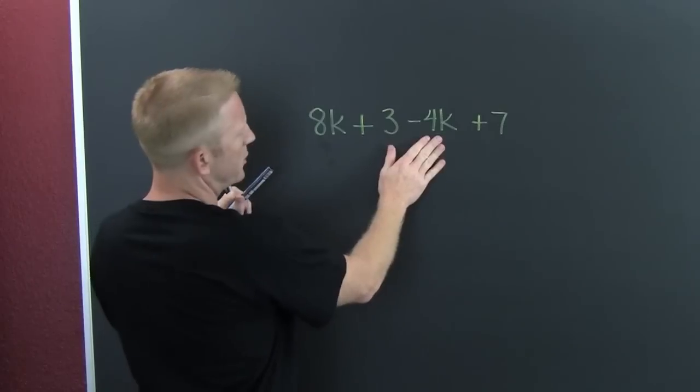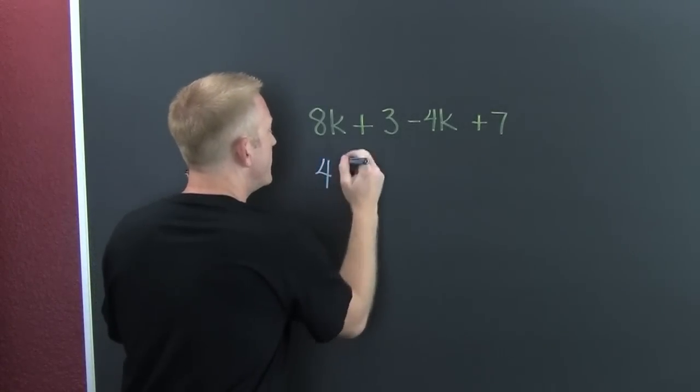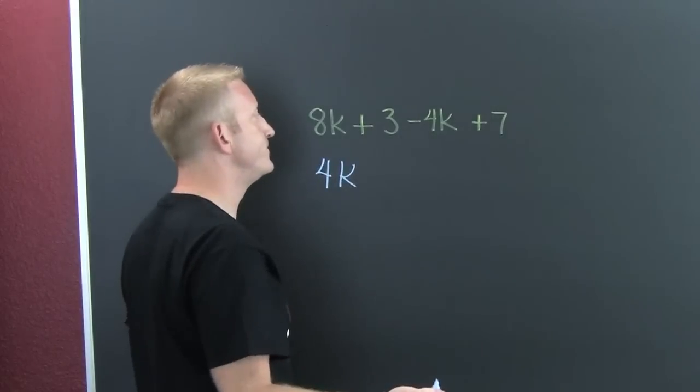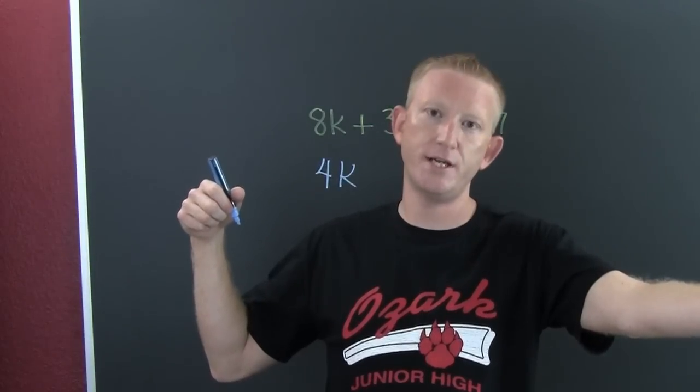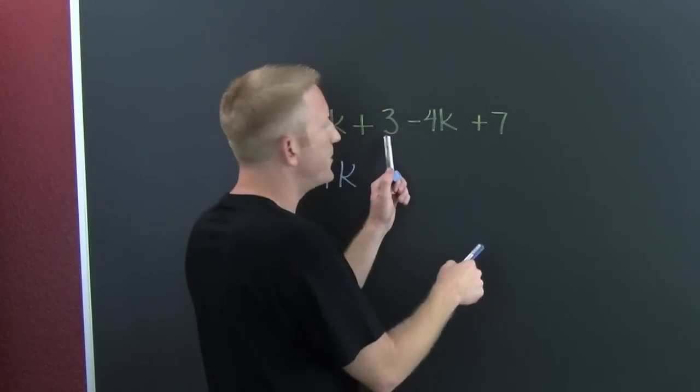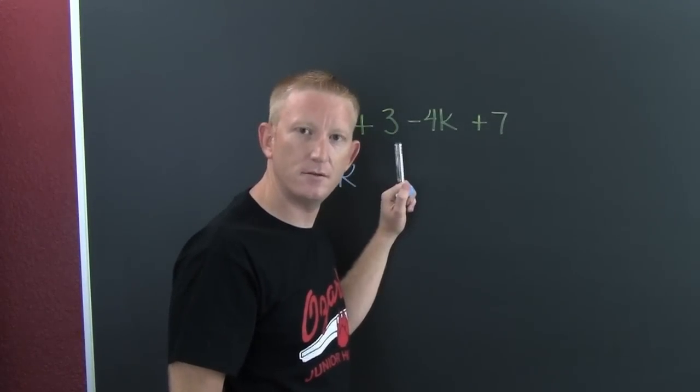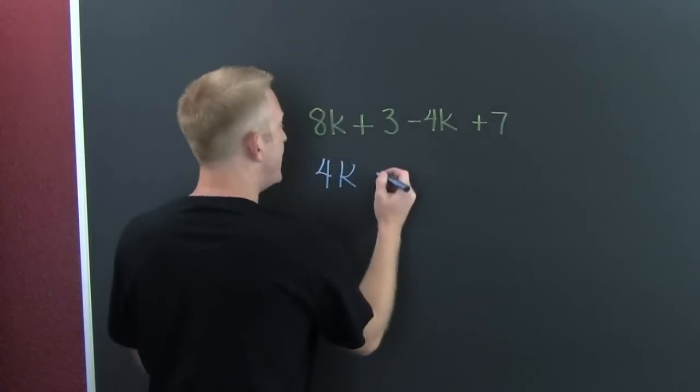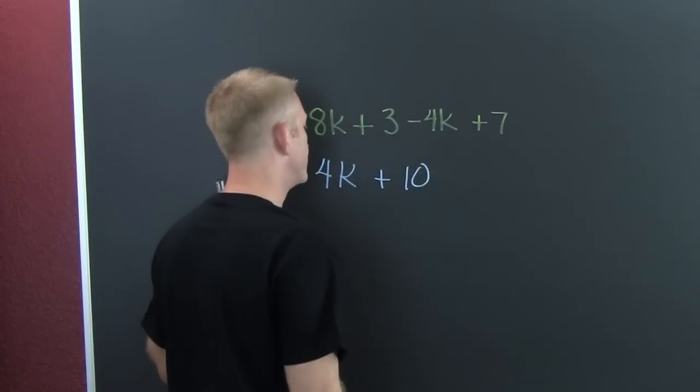And we also have constants. Those are the ones without variables. They don't change, they're constants. All right, so I have 3 and somebody comes along and gives me 7 more, and I'm like, wow, thank you, we appreciate it. And we end up having 10.